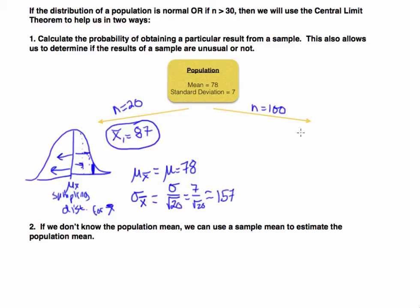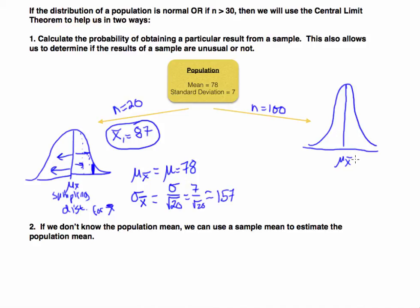Before we end this video, I want to look at what would happen if we had a sample size of 100 instead of 20. The sampling distribution mean doesn't change — it will always target the population mean regardless of sample size. So the sampling distribution of all the means will also equal the population mean of 78. What's going to make this sampling distribution different is that our standard error is going to be smaller, which means this bell curve is going to be skinnier and a lot closer to the mean.